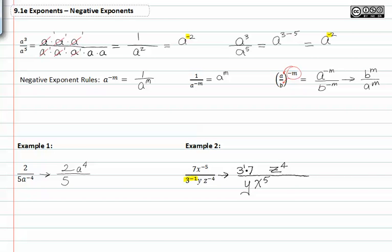So now that we've figured out what all our multiplication is, we can just go ahead and simplify this even further. Three to the first times seven to the first is 21, z to the fourth over x to the fifth y.